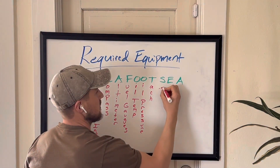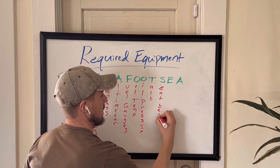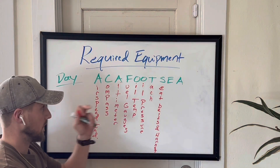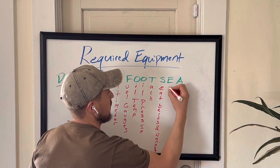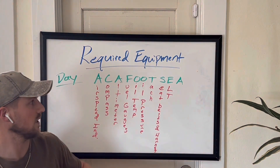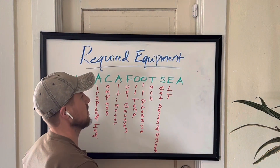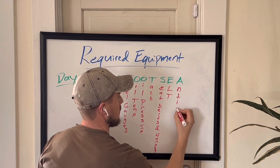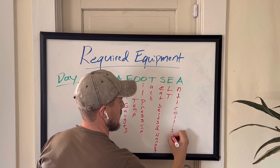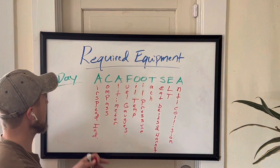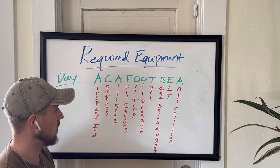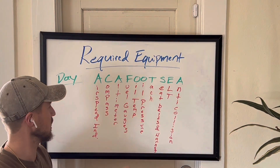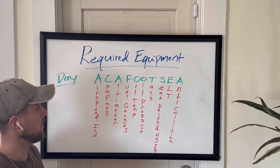S is going to be seat belts and harnesses. E is going to be your Emergency Locator Transmitter, or ELT. And finally, A is going to be anti-collision lights. That is the day required equipment for the type of aircraft you're going to fly as a student pilot. Let's see if ACA FOOTSIE catches on — students like it and it works for them.